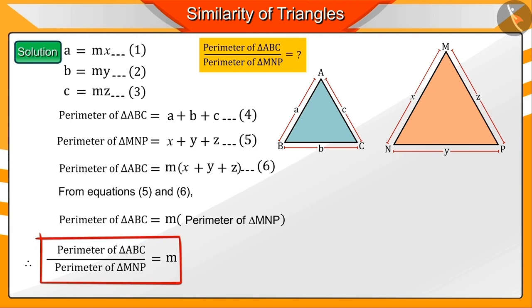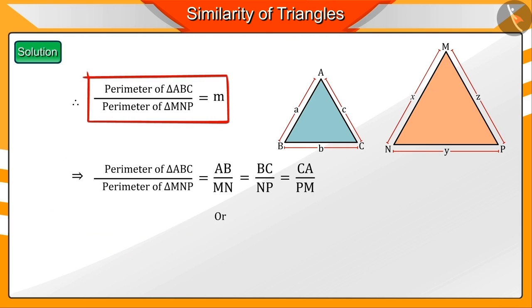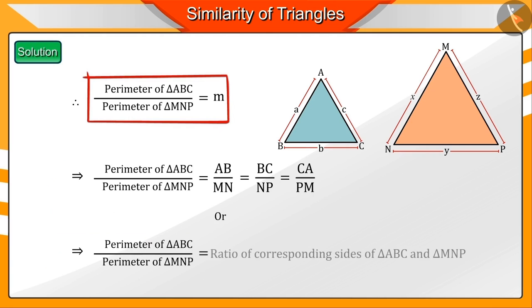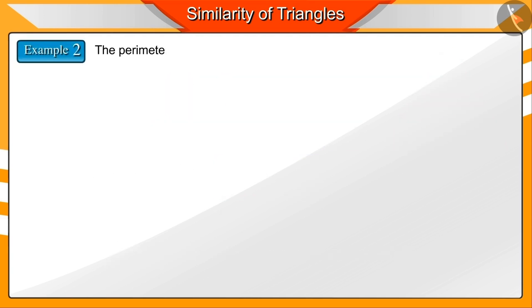If we observe carefully, we can see that the ratio of the perimeters of triangles ABC and MNP is equal to the ratio of their corresponding sides. Let us look at one more example.